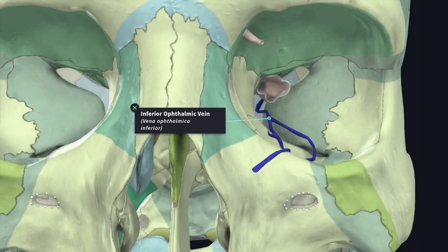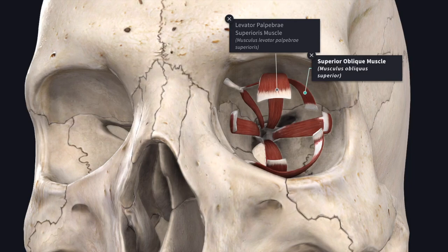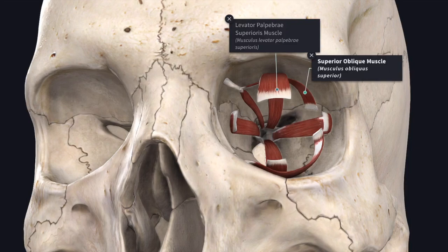The inferomedial compartment transmits the inferior ophthalmic vein. Outside the tendinous ring, the orbital surface of the lesser wing gives origin to the levator palpebrae superioris muscle and, more medially, to the superior oblique muscle.